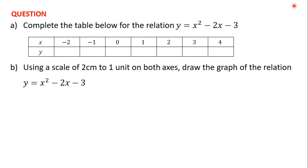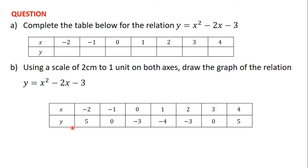Welcome back. We started solving this question in the previous video. We solved the first part — we completed the table for the relation y is equal to x squared minus 2x minus 3. In this video, we are going to use that set of x and y values to draw the graph of this relation on a graph sheet, using a scale of 2 centimeters to 1 unit on both axes.